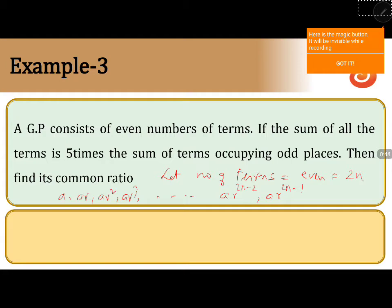Now, the sum of all the terms Sn equals a(r^(2n) - 1)/(r - 1). Let's call this equation 1.